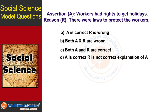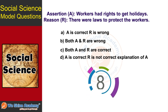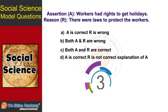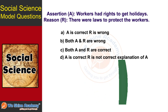The next question is: Find out whether the given assertion and reason are correct. Assertion: Workers had the right to get holidays. Reason: Laws were passed to protect the workers. The answer is both the assertion and reason are wrong.